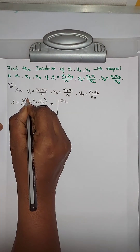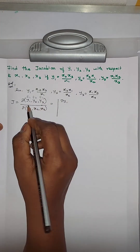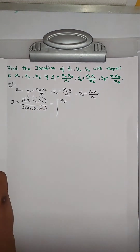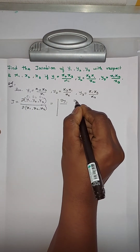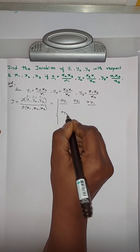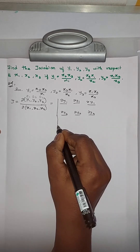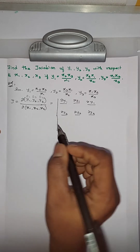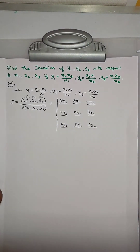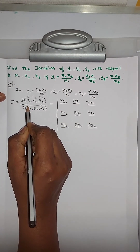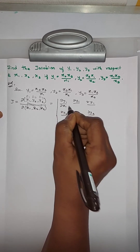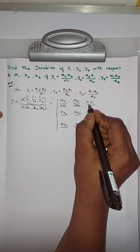We consider this as rows r1, r2, r3, which means y1 completely comes in the first row, y2 completely comes in the second row, y3 completely comes in the third row. So the first row becomes ∂y1/∂x1, ∂y1/∂x2, ∂y1/∂x3.